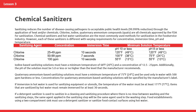Chemical sanitizers reduce the number of disease-causing pathogens to acceptable public health levels, meaning a 99.999% reduction through the application of heat and or chemicals. Chlorine, iodine, quaternary ammonium compounds, or quats, are all chemicals approved by the FDA for sanitization. Chemical sanitizers and hot water sanitization are the most commonly used methods in the food service industry. However, each of these sanitizers is different with varying requirements for concentration, immersion time, pH, and temperature.